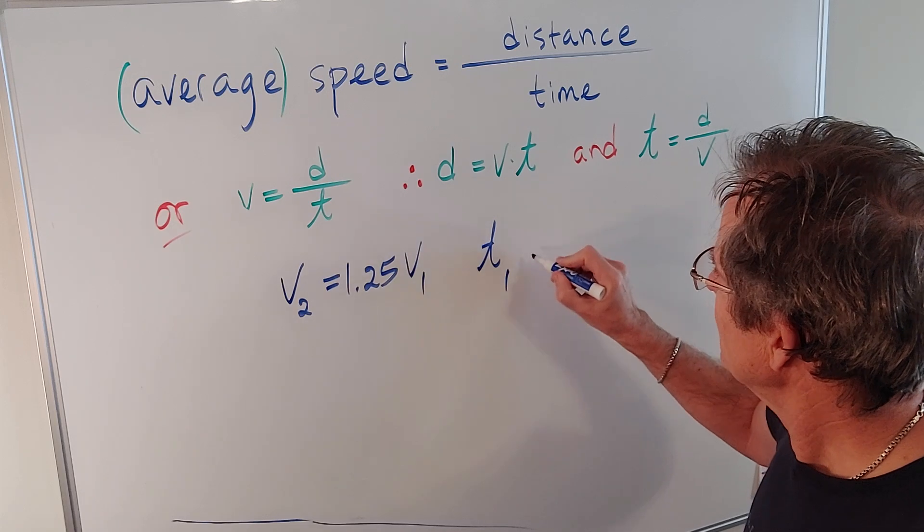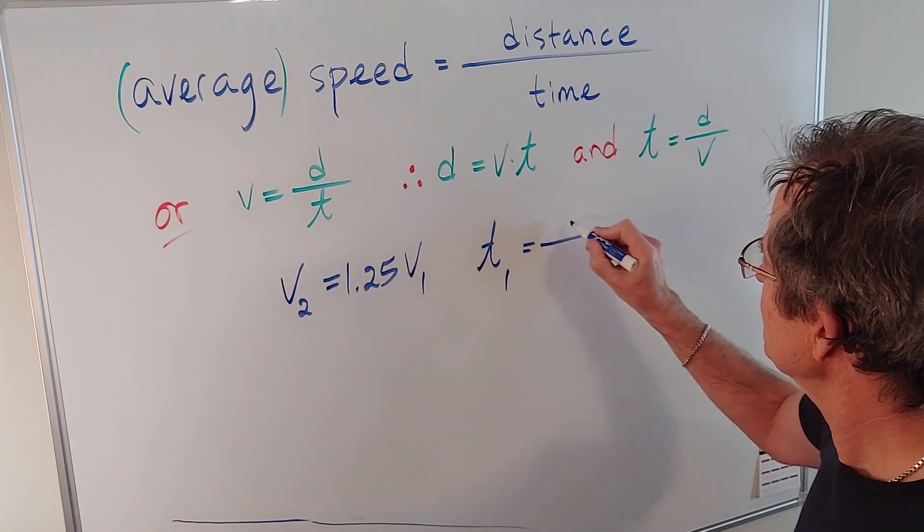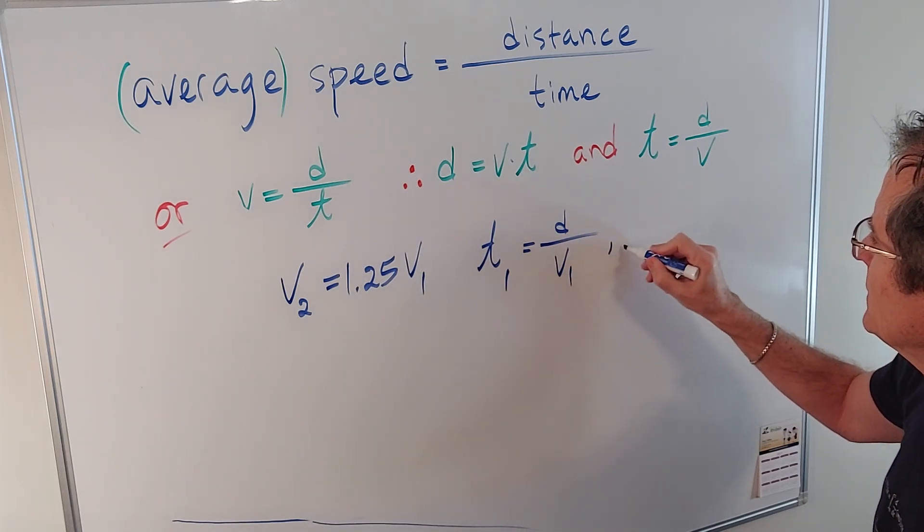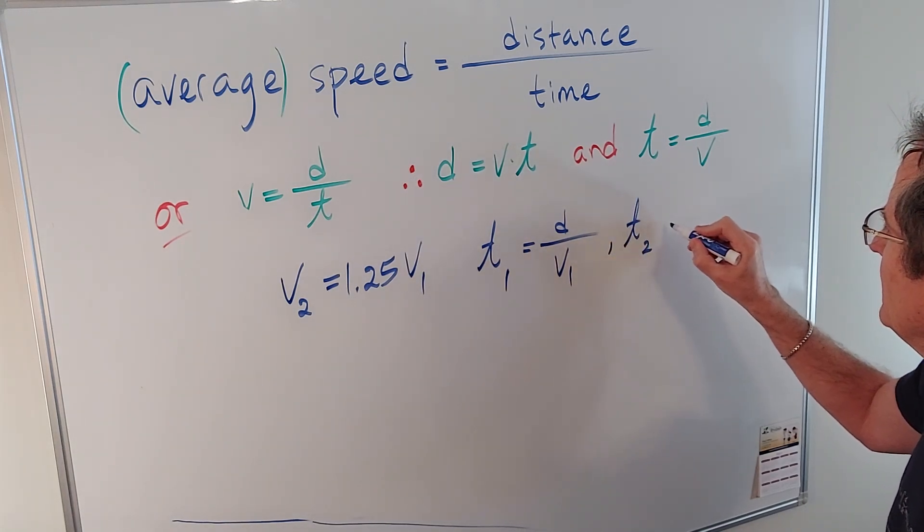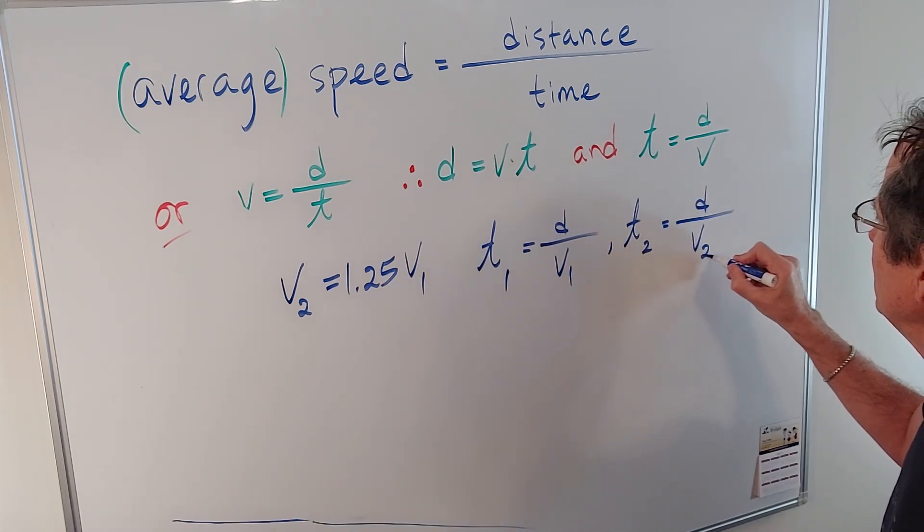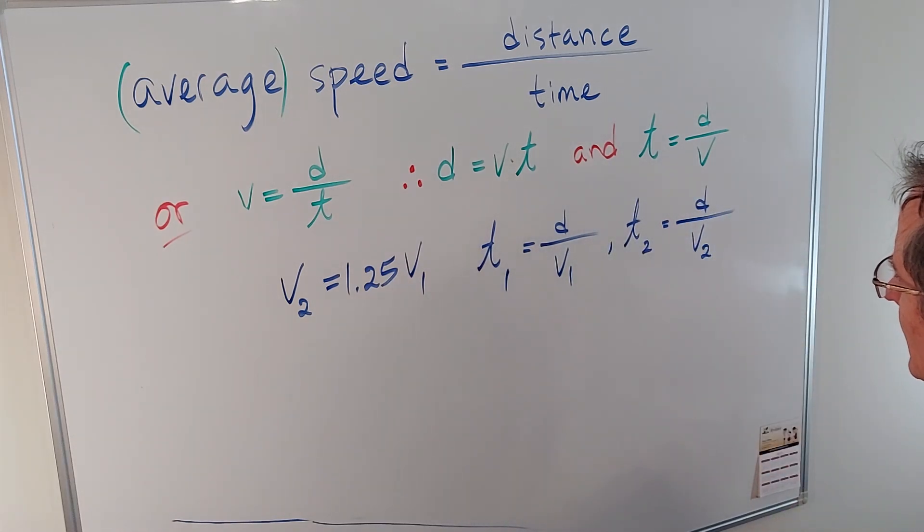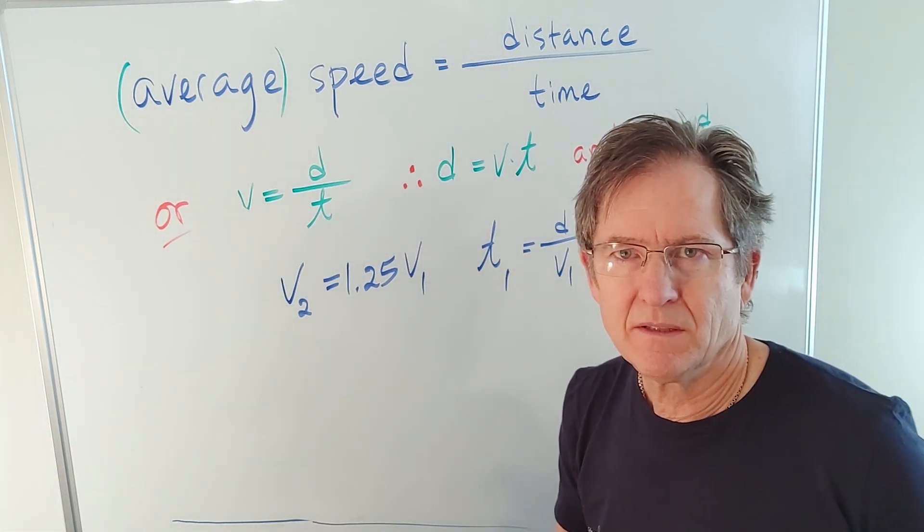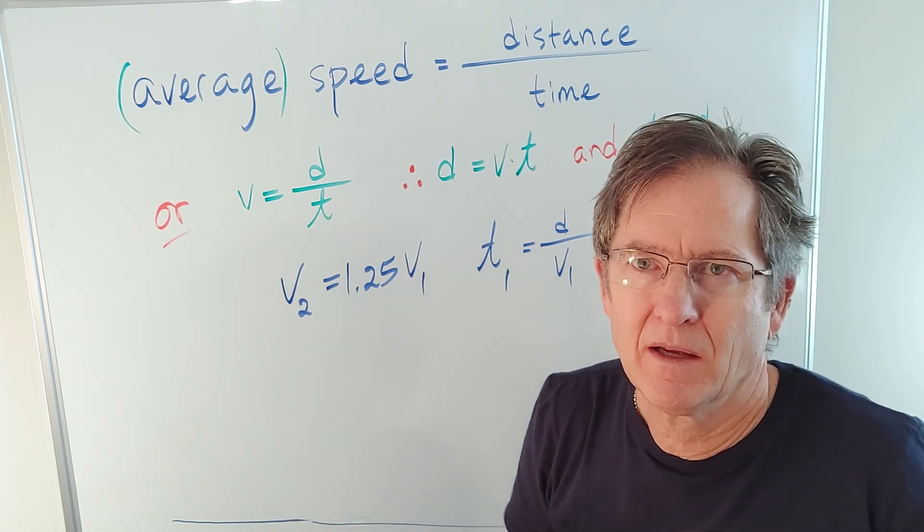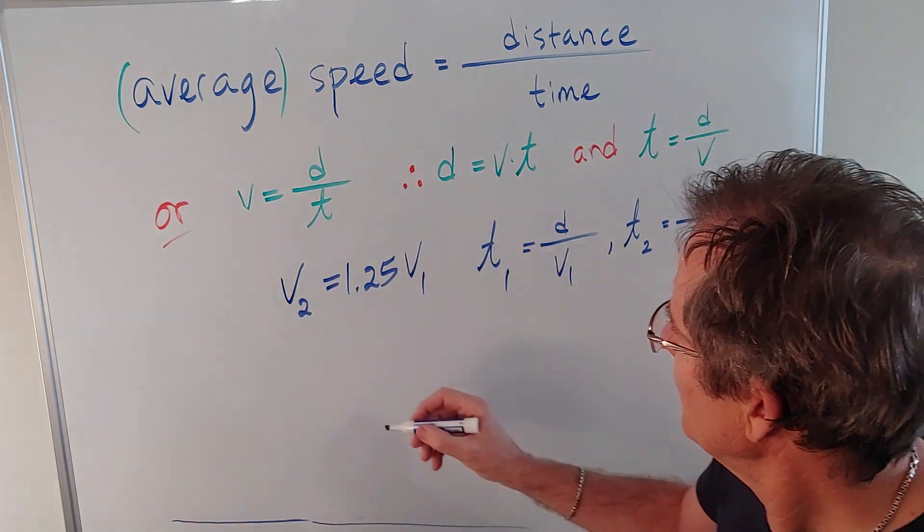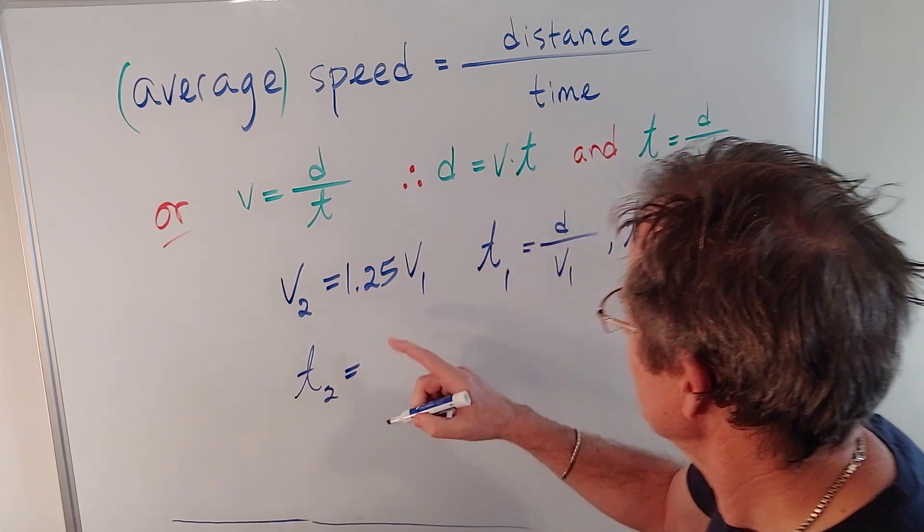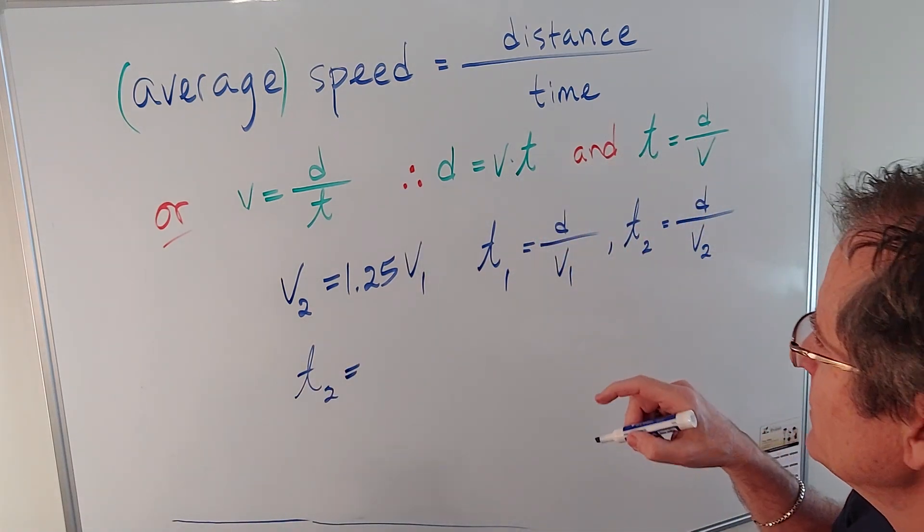Well, the time to listen at the original speed is d over v1, from here. And the time at the new speed would be d over v2, where d, again, just the distance you walk, or the length of the book you're reading, or the podcast, etc. We want to calculate the second time using these formulas and find out how it compares to the first time.